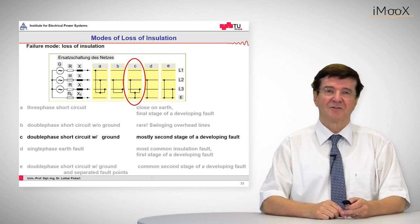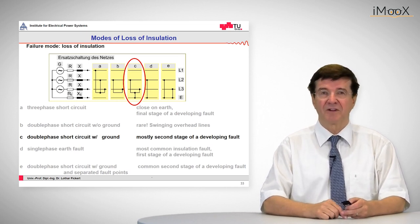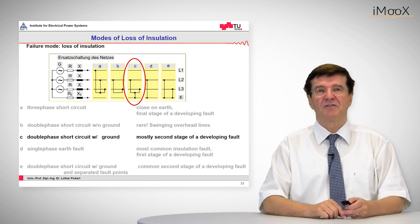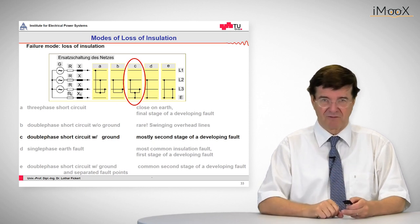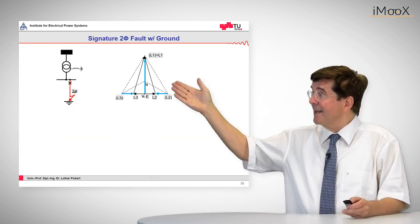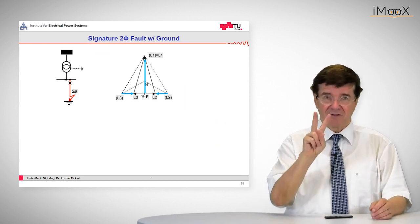The next one in contrast to the first phase-to-phase voltage collapse is the phase-to-phase to ground fault. This is mostly the second stage of a developing fault which started with a single phase-to-ground fault.